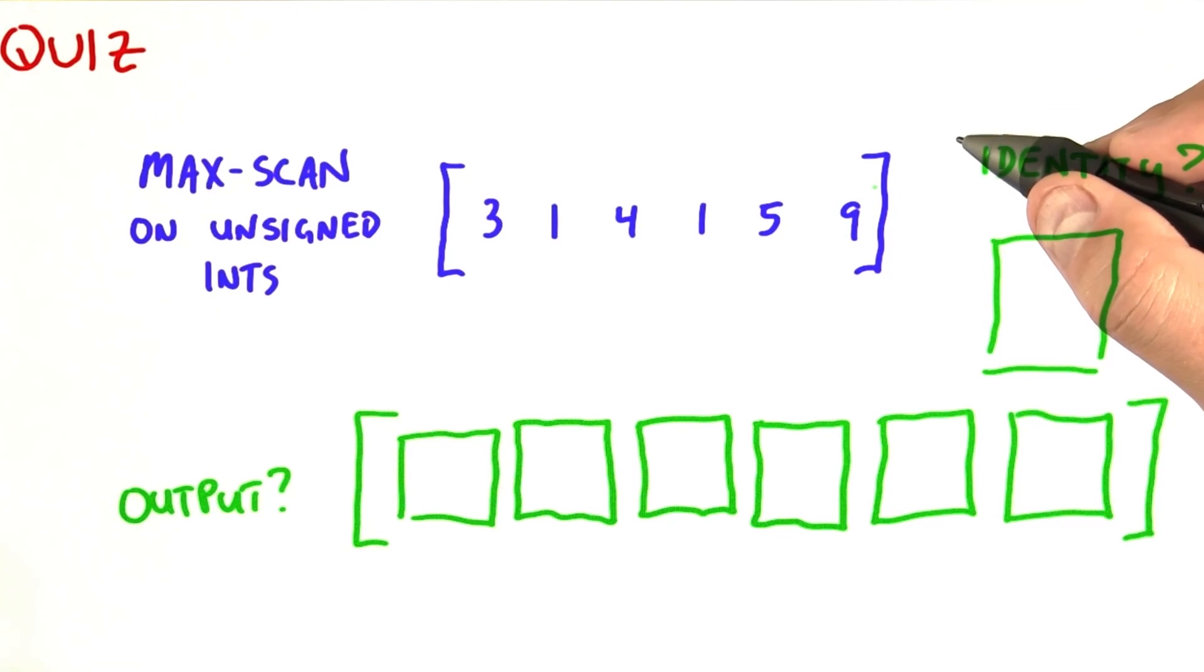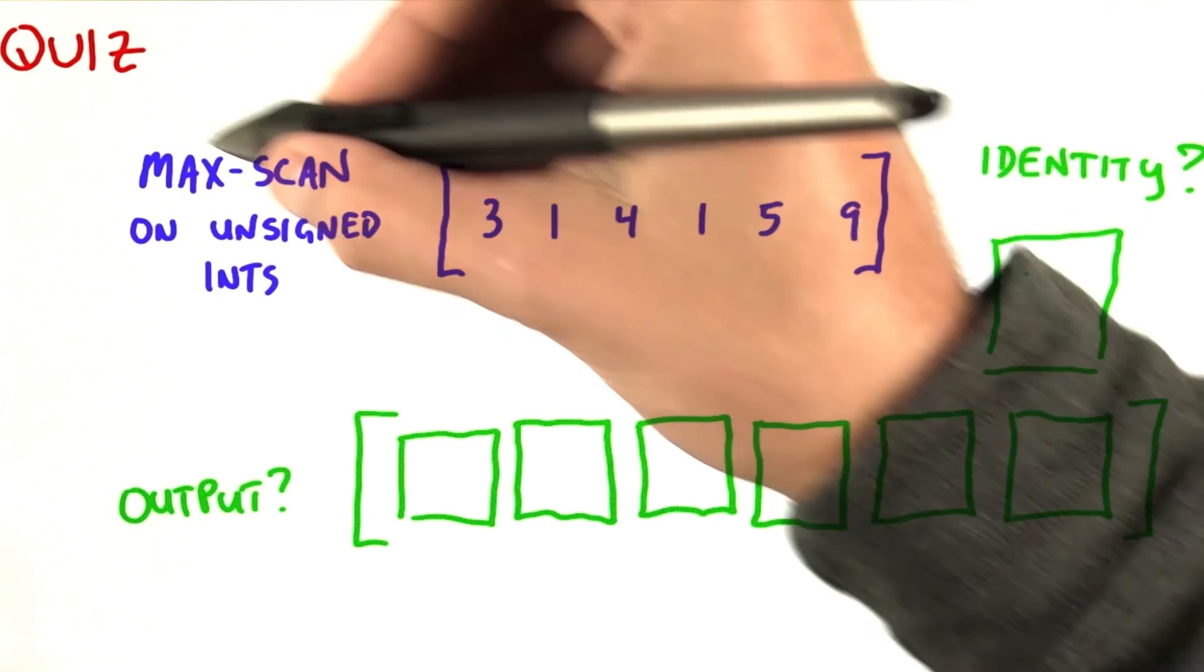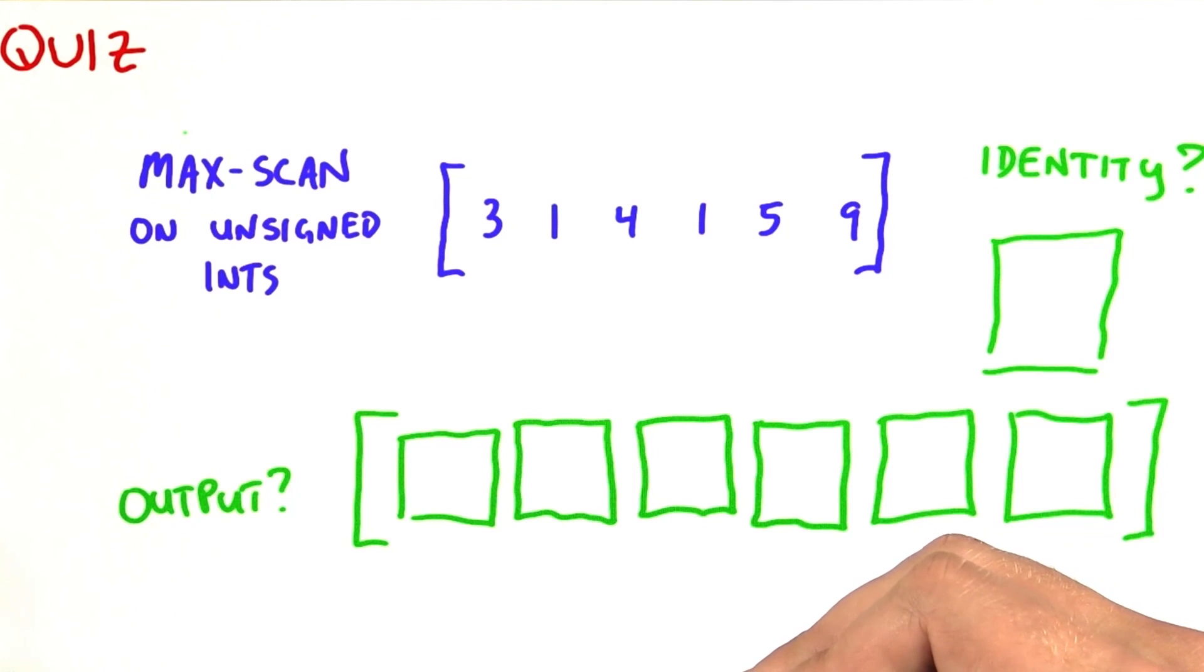The same array of unsigned integers, 3, 1, 4, 1, 5, 9. I'd like to ask you two things. First, what is the identity element if we do a max scan on unsigned ints? And second, what's going to be the output of this max scan operation?